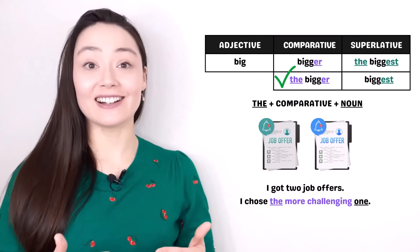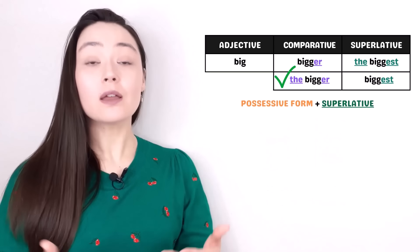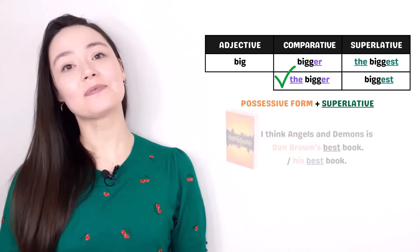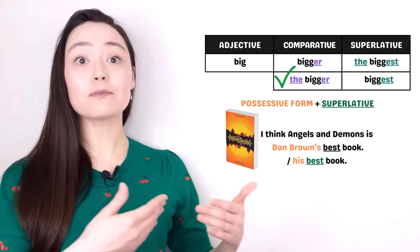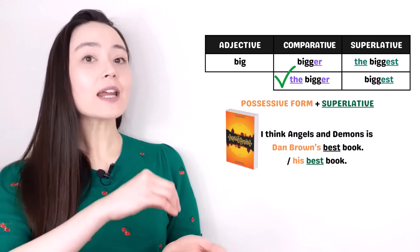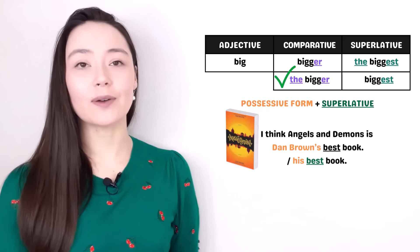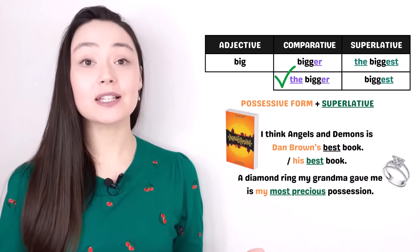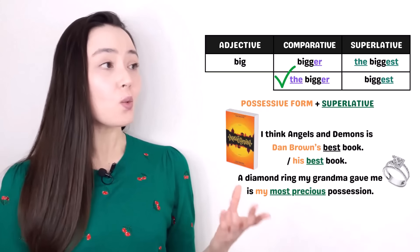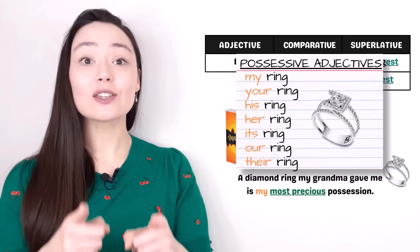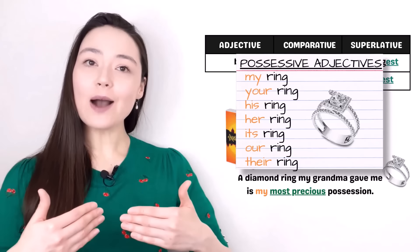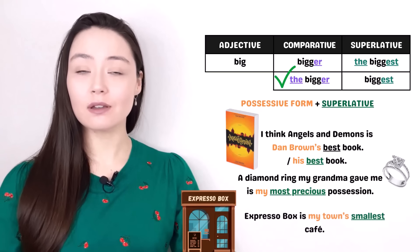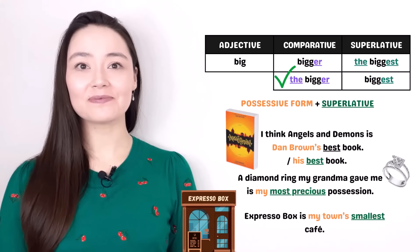Now let's look at replacing 'the' with a superlative. We often use a possessive form before a superlative. I think Angels and Demons is Dan Brown's best book — Dan Brown's is possessive. A diamond ring my grandma gave me is my most precious possession — 'my' is a possessive adjective. Other possessive adjectives include: your, his, her, its, our, their. Espresso Box is my town's smallest cafe.